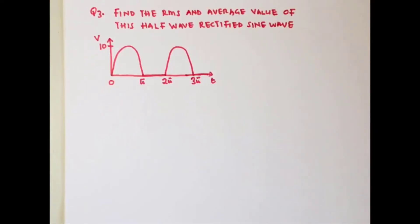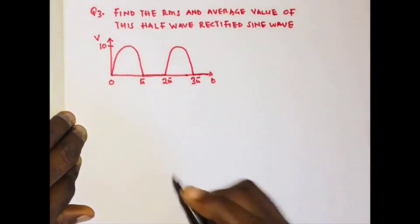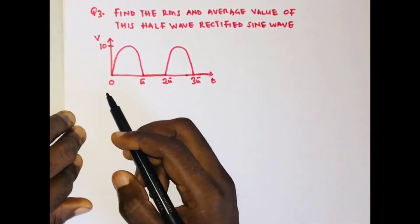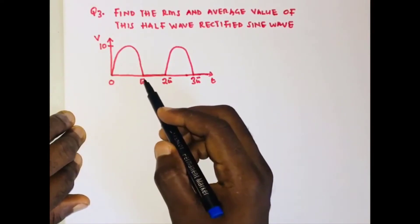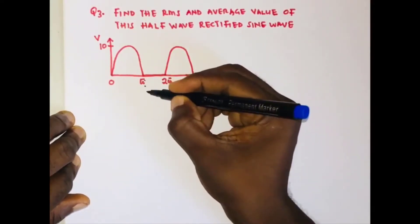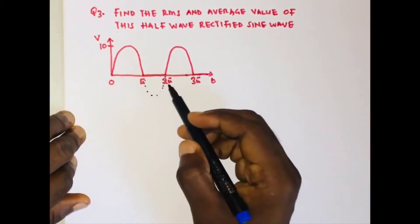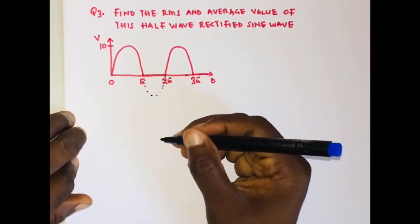Now let's look at the sine wave. In this question we are going to find the RMS and average values of this half-wave rectified sine wave. For this waveform, the amplitude is 10, with the positive half cycle from zero to π. The negative half cycle has been clipped, so from π to 2π we have the negative half cycle being clipped.